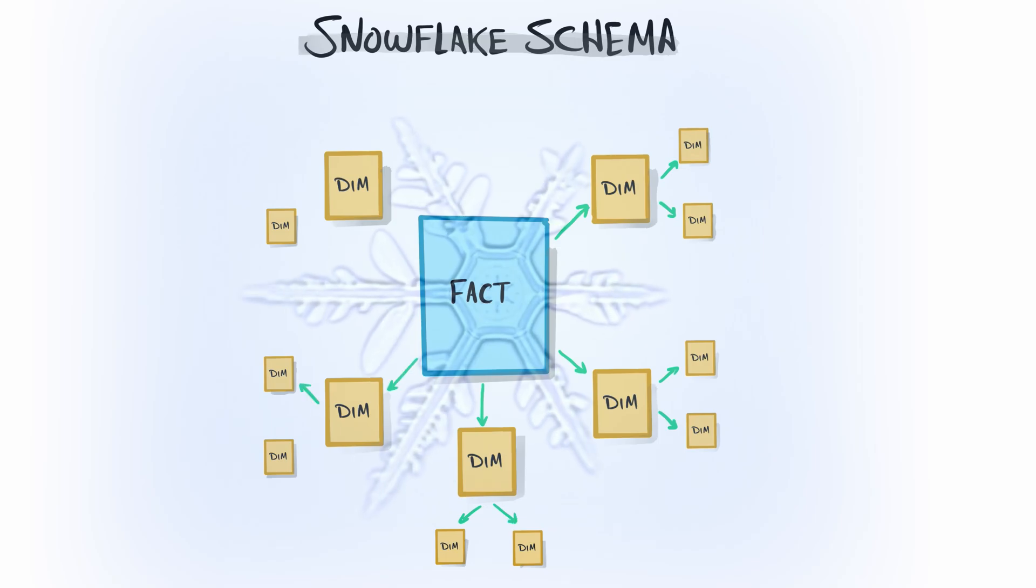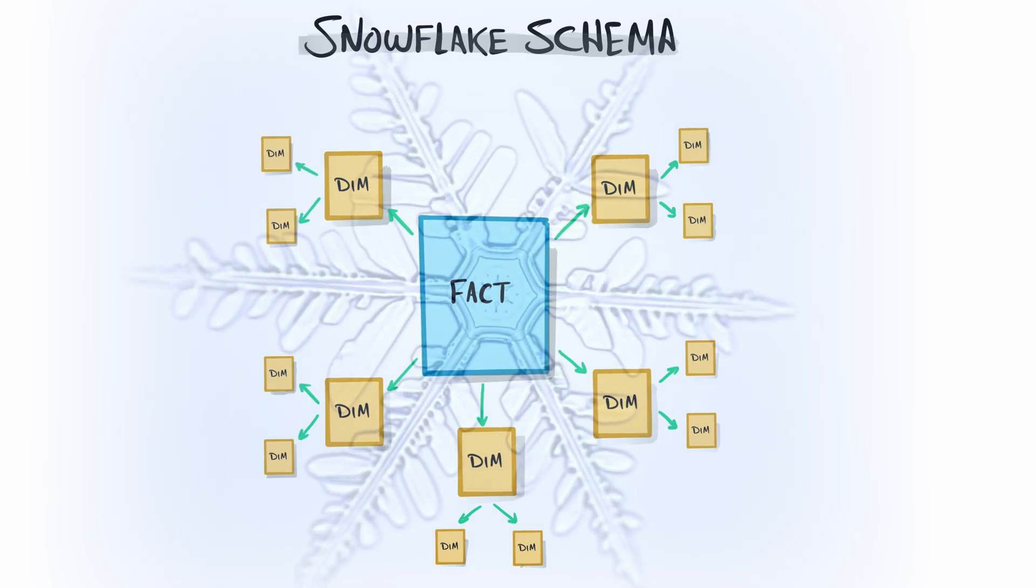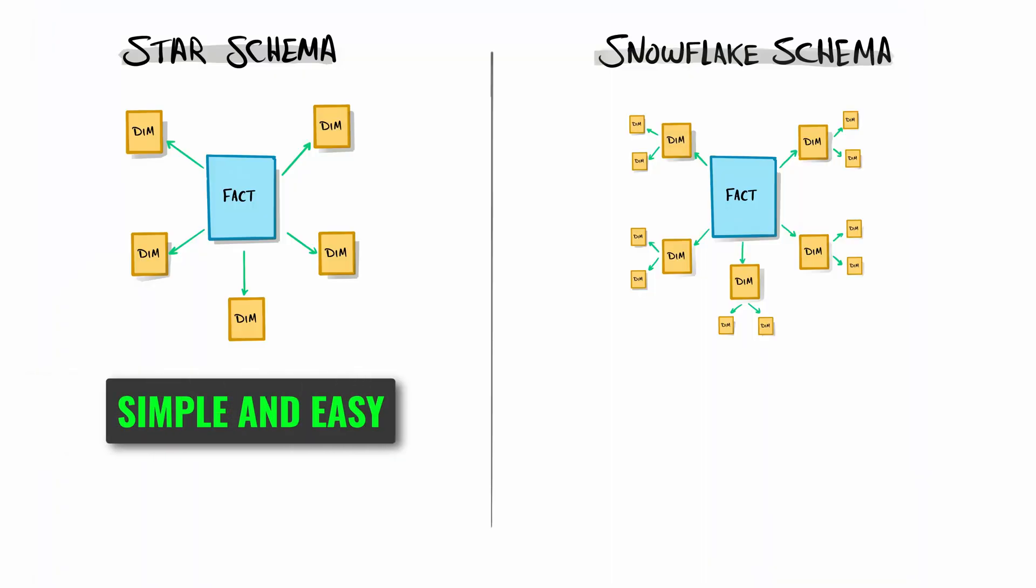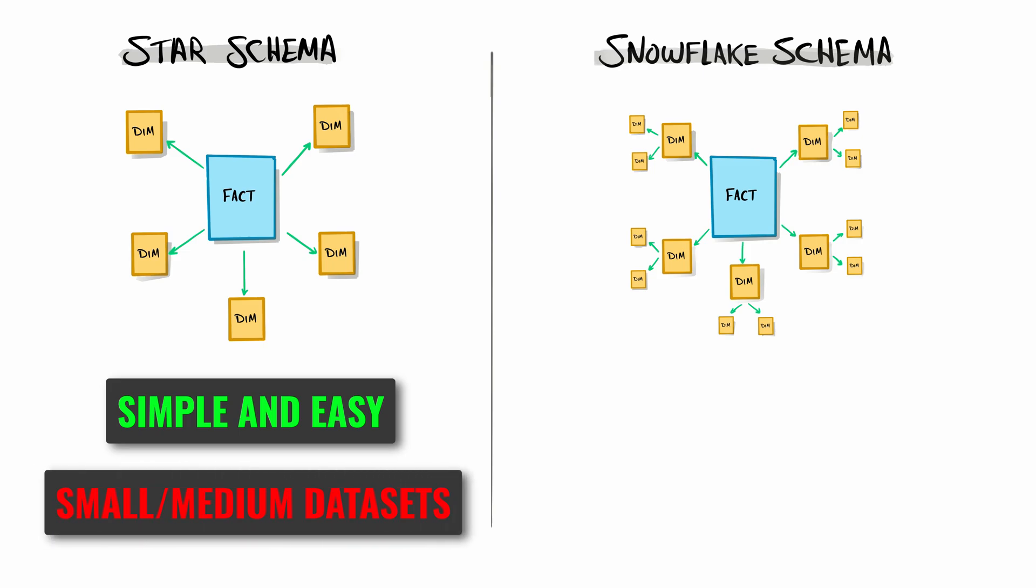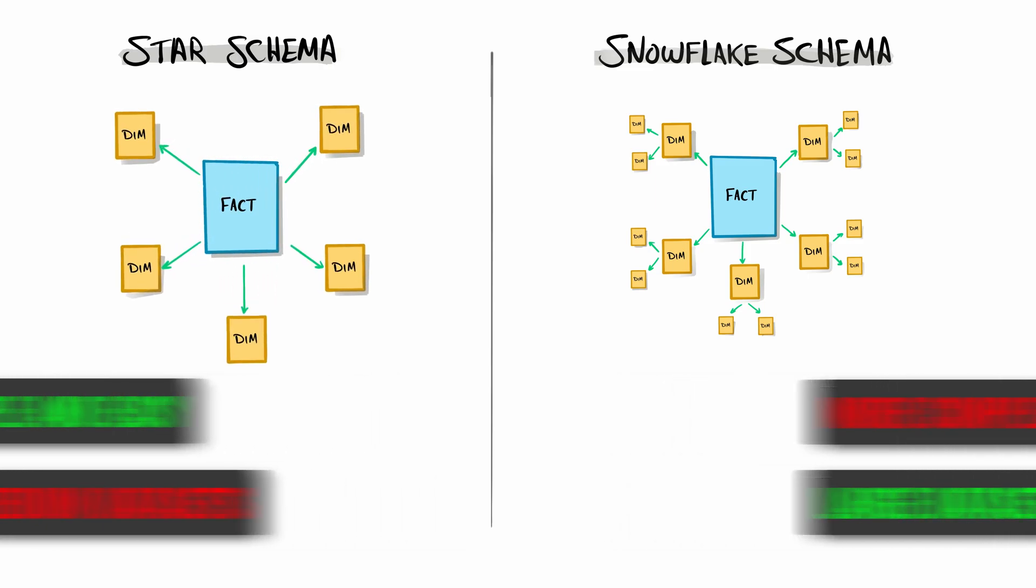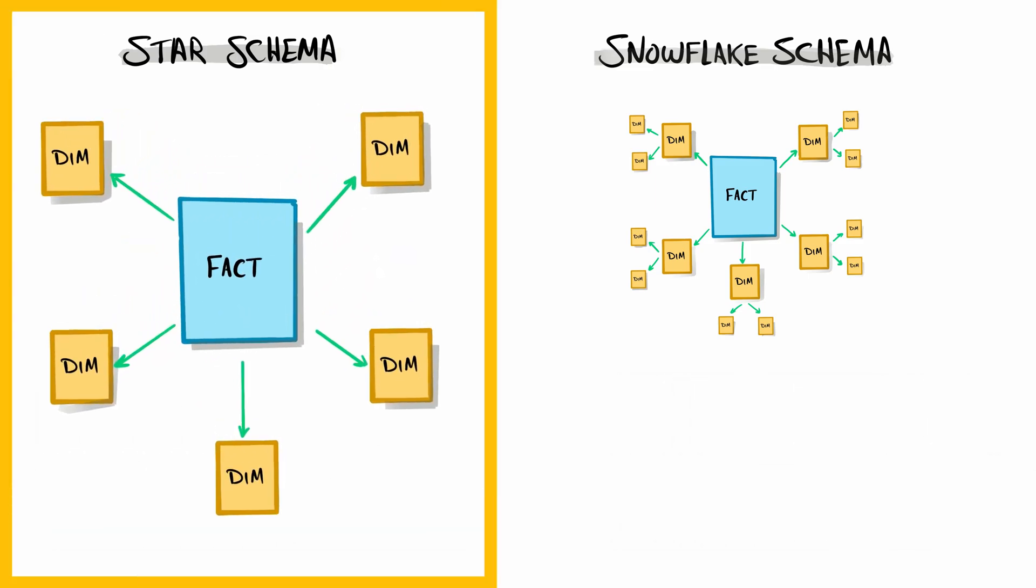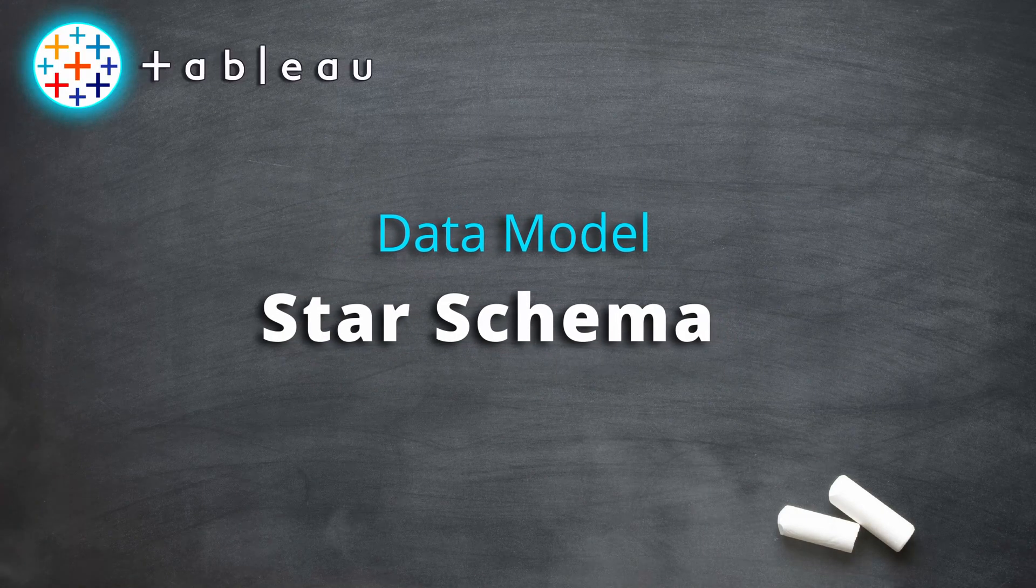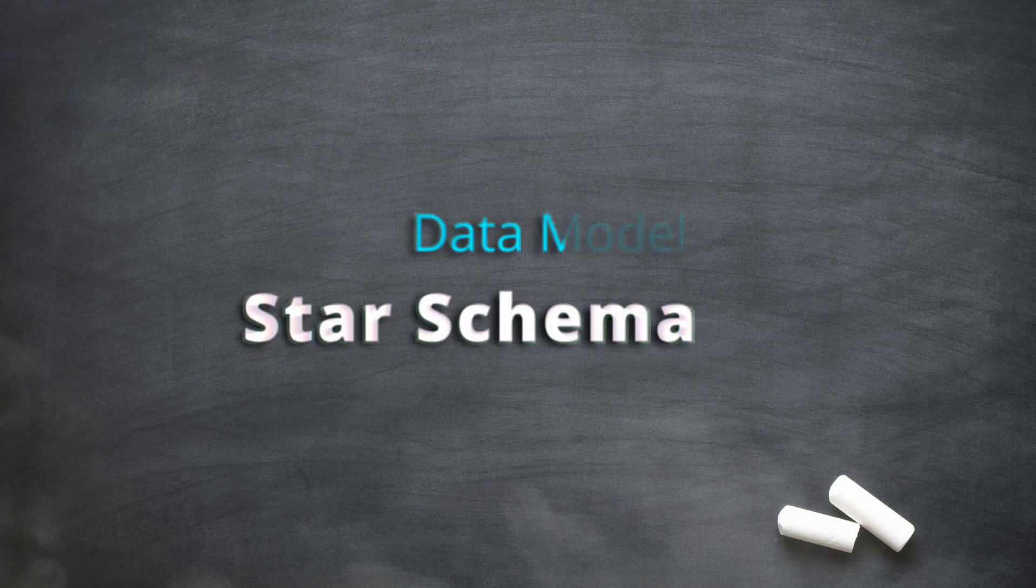The shape of these data models looks like a snowflake. So star schema is simple and easy to understand, and we usually use it if our data set is small or medium. On the other hand, the snowflake schema is more complex but it eliminates the duplicates and reduces the storage space, and we usually use it if we have large data sets. The data sets that I've prepared for this Tableau course are using the star schema data model just to keep it simple and easy to follow.